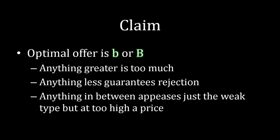Why is this the case? Why is the optimal offer either lowercase b or uppercase B? Well, it can't be the case that Albert optimally offers more than uppercase B, because that guarantees that Barbara will accept the offer. But Albert could do better for himself by scaling that down a little bit, getting it closer to uppercase B, still having both types accept, and receive more of the surplus for himself. So anything greater is too much.